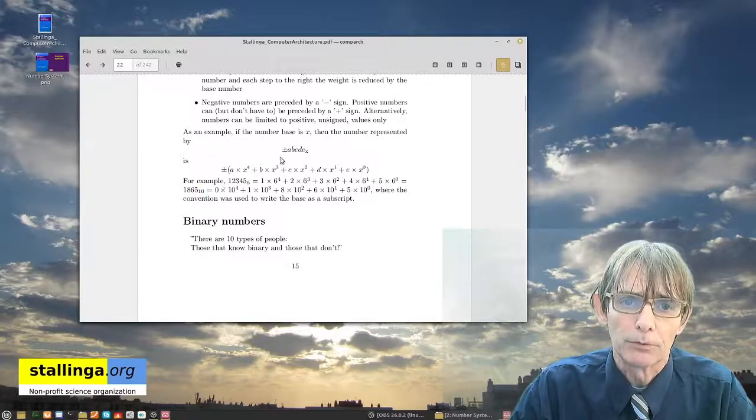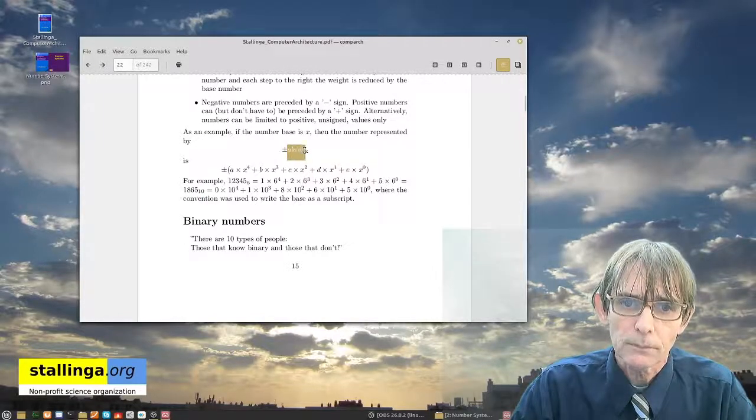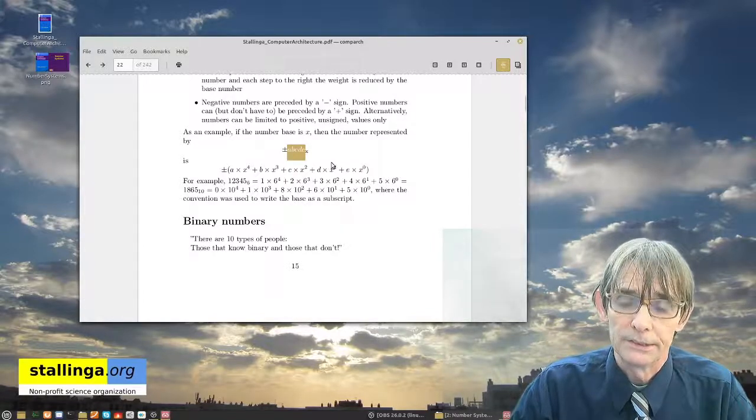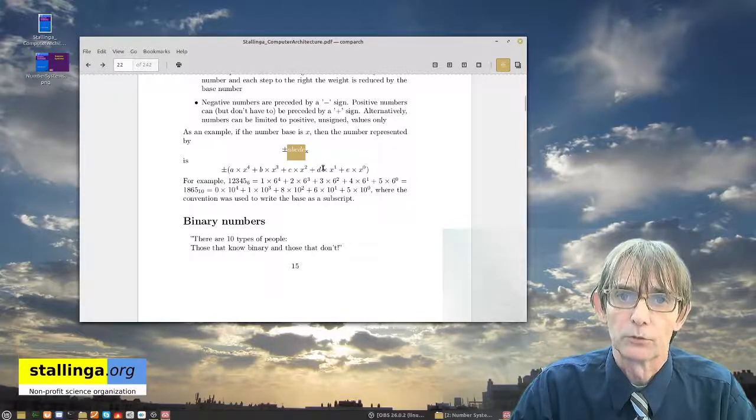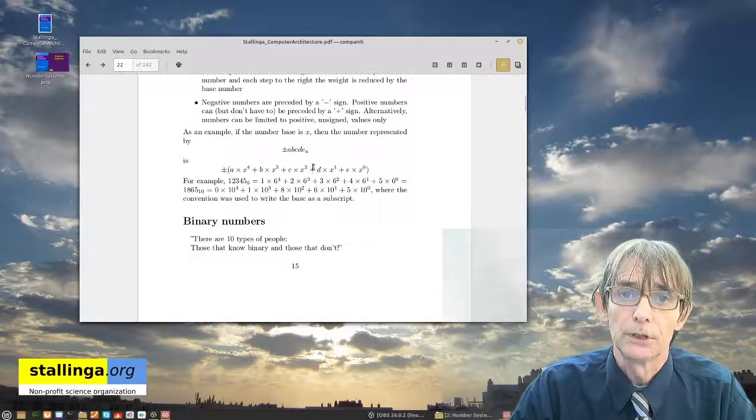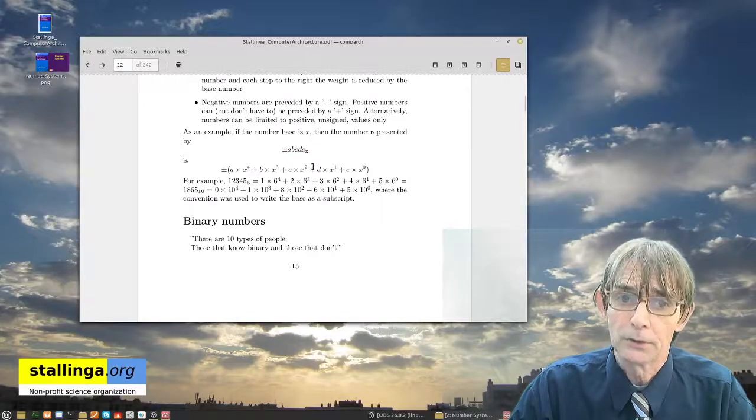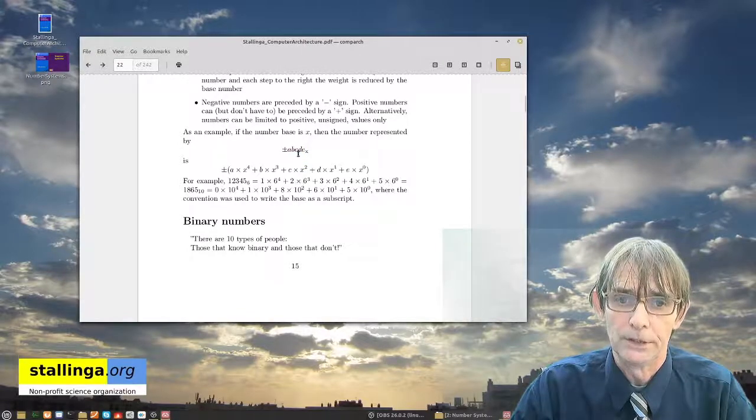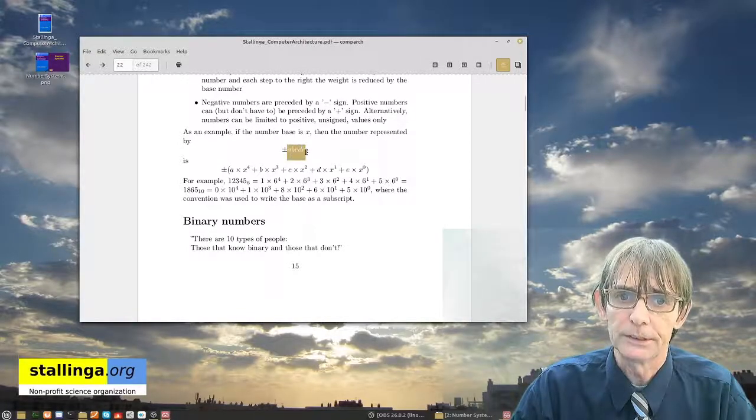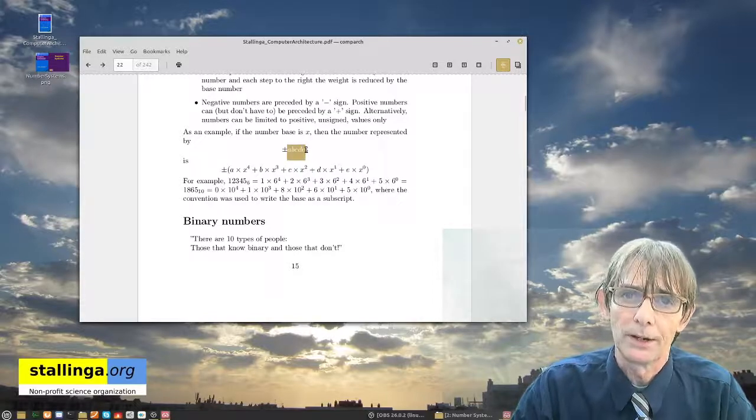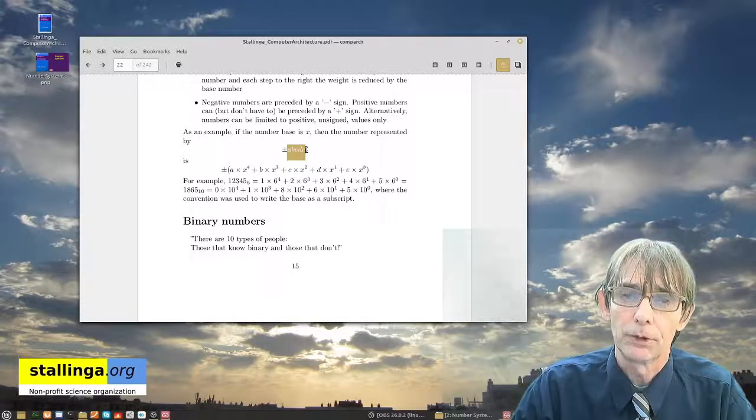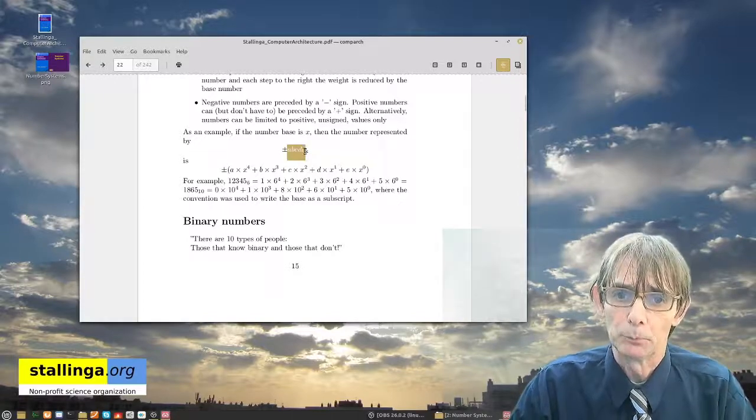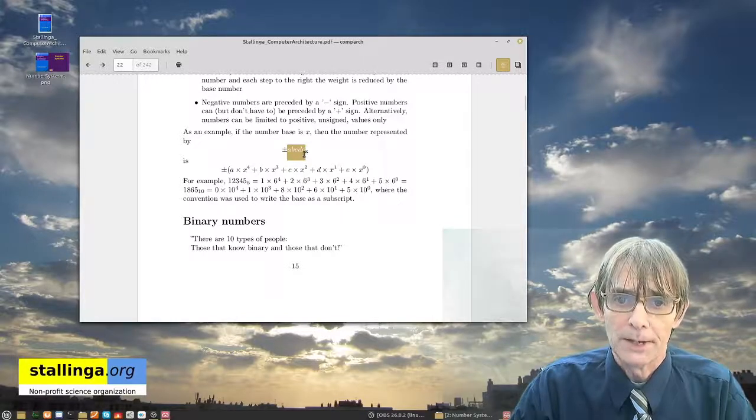This is basically a system of representing numbers, and as we have seen before, the numbers don't exist in the computer. Everything is conventional, but this is the convention that we're going to use for binary numbers, for decimal numbers. We will have a set of digits and the one on the right will have the lowest weight and the one on the left will have the highest weight, and every step is then multiplication by the base.